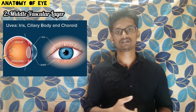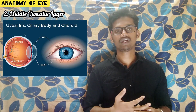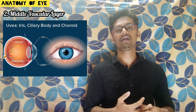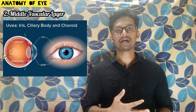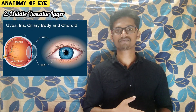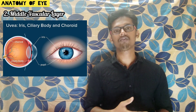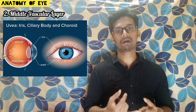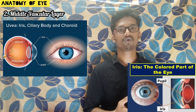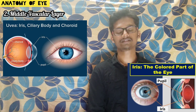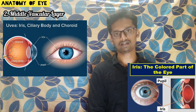Next is the choroid. This structure provides nutrition and also prevents the reflection of light. In order to get vision, the light should not get reflected, so the choroid helps prevent that while also providing nutrition. Next is the iris. The pigment present in the iris gives the color to our eyes. Some of us have black, brown, or blue eyes — this is because of the pigment present in the iris. The iris also controls the size of the pupil, thereby controlling the amount of light entering the eye.